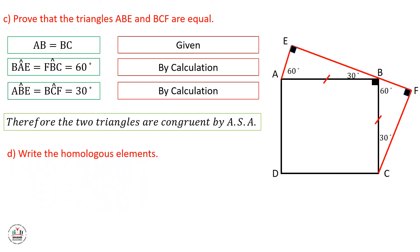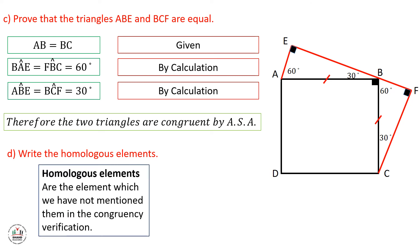Now let's solve the final part: we need to write down the homologous elements for these triangles. Homologous elements are simply the elements not mentioned in the congruency verification. These elements are: AE equals BF, EB equals FC, and angle AEB equals angle BFC.